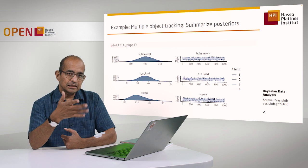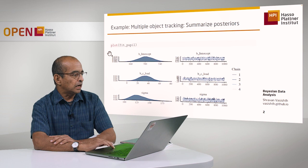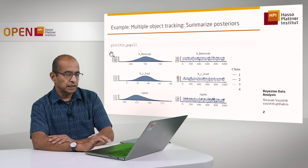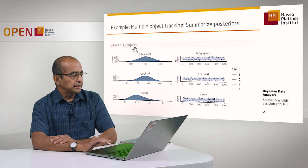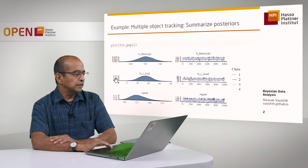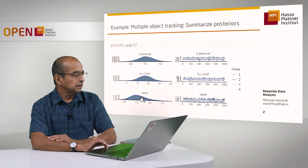In R there's also a plot function for standard base graphics, but this plot function is working with BRMS output. So this is the fitted pupil data that I had fit earlier. There are three parameters: here's the intercept, here's the slope — I know it's the slope because the name of the predictor, c_load (centered load), is listed here — and here's the sigma parameter.